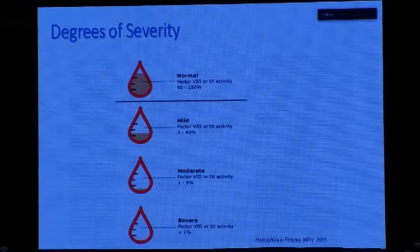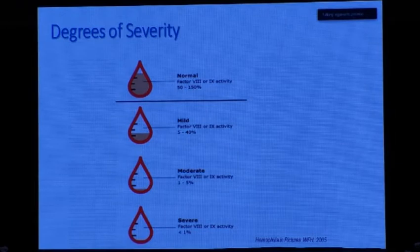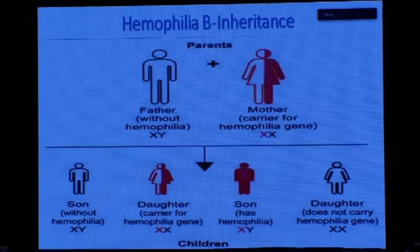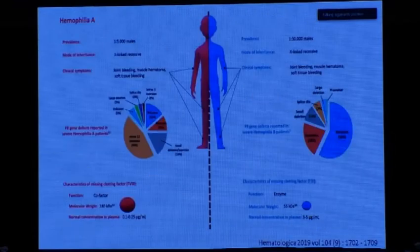The degree of severity in Hemophilia B is like Hemophilia A, as illustrated by Professor Dr. Mona Hamdi: severe with a factor less than 1%, moderate with a factor 1–5%, mild with 5–40%, and normal. The majority of our hemophilia patients are moderate. In terms of inheritance, it is X-linked as you all know, but the key difference lies in the gene mutation.